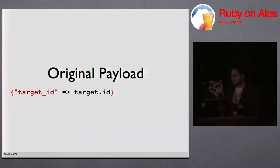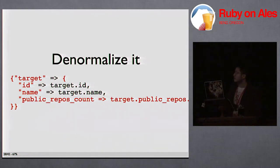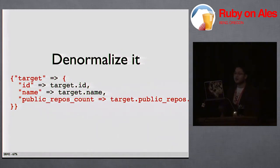I changed that all to — first I denormalized the payload hash, so we store everything we need to render the template. The nice thing is the event data doesn't change as the targets change. So if you follow a user and they change their name or create more public repos, it doesn't invalidate the caches of all the other events — when that event happened, this person was named this and had this many repos. We like to stuff it all in the event record, which also makes it a lot faster to render since we don't have to do any database hits.